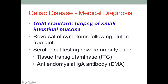Biopsy of the small intestinal mucosa is the gold standard for diagnosing celiac disease. The damage done by the condition will lead to flattened villi, which can be seen on the biopsy tissue, though it is an invasive procedure. Before a biopsy, we may have a good idea of the condition, because if the patient follows a gluten-free diet and symptoms resolve, that would be a clear sign they are likely a celiac patient. Also, due to the autoimmune nature of the condition, we have serum markers we can check, such as the IgA antibodies.